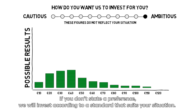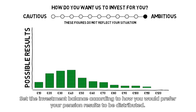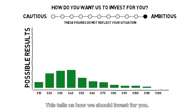If you don't state a preference, we will invest according to a standard that suits your situation. For most people, this is not necessarily a position in the middle of the investment balance. Set the investment balance according to how you would prefer your pension results to be distributed — this tells us how we should invest for you. You can change the balance again at any time.